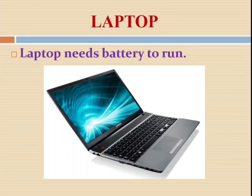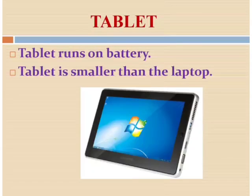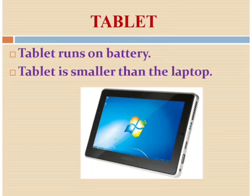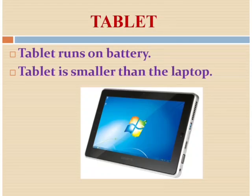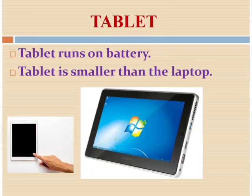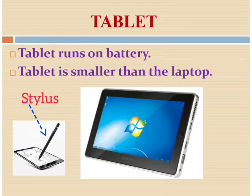Inside a laptop there is an inbuilt camera and speaker also. Next is tablet. Tablet is a very special type of computer. It is very small in size, like your book. It is also called tablet PC. Tablet runs on battery. It has a digital camera, microphone, and a touch screen. You can work on a tablet by touching the screen with your finger or a pen called stylus.